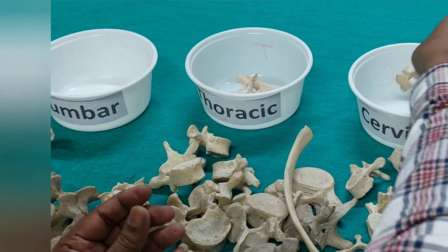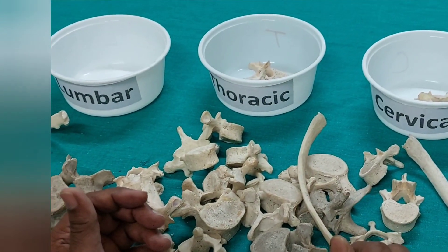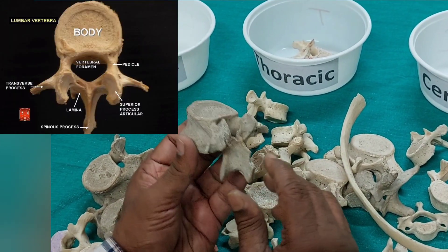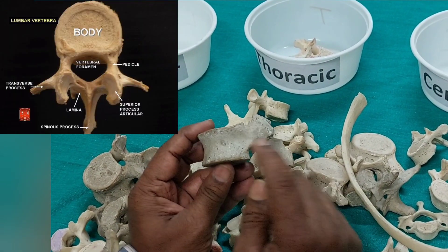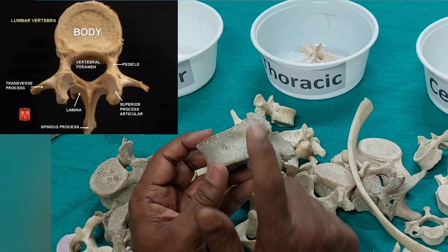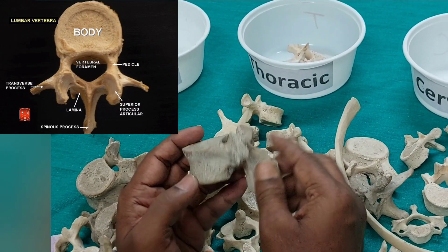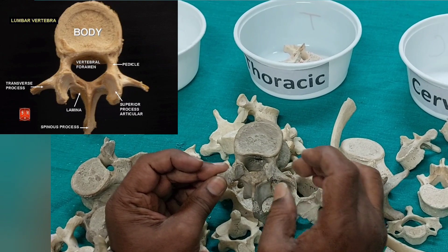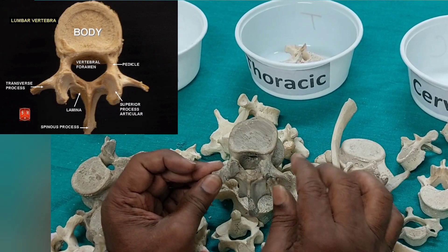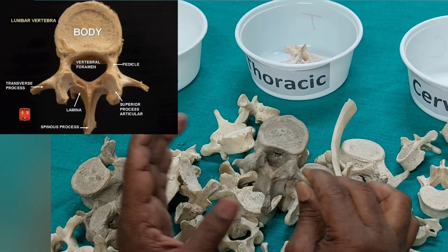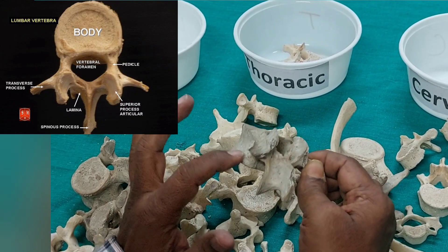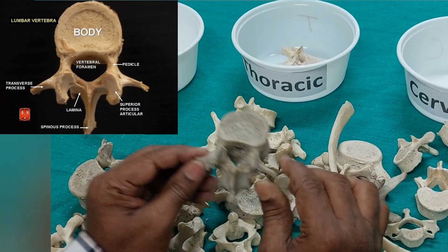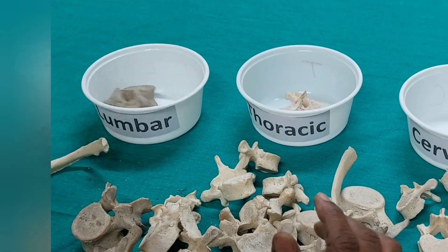I will keep it in the cervical vertebra container. For another vertebra I take: I check whether a costal facet is there — if not, it is not a thoracic vertebra. Is there any foramen in the transverse process? No foramen — so it is not a cervical vertebra. By this reasoning — no costal facet, no foramen transversarium — it is a lumbar vertebra, so I will keep it in the lumbar vertebra container.